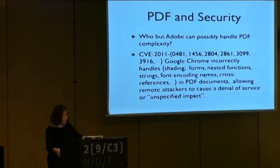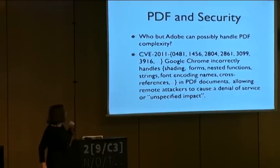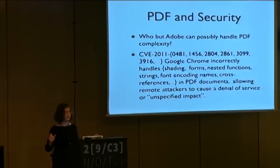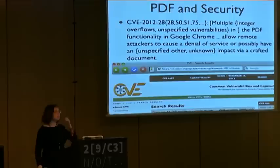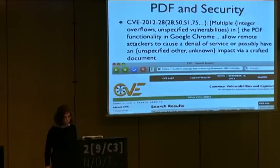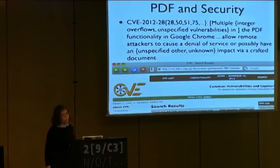Well, Adobe can kind of handle PDF. Apparently Google cannot. Just from the year 2011, there are a couple dozen CVEs in the MITRE database. They all have the same form: 'Google Chrome incorrectly handles this, this, this, and this, allowing remote attackers to cause a denial of service or unspecified impact.' In 2012 they got smarter — now they actually combine different vulnerabilities into the same bug report. Some of those CVEs have as many as 16 links to different bug reports in them. So there are 43 CVEs referring to PDF and Chrome, but in particular there are probably hundreds of actual bugs. That's the sound of Google having trouble parsing PDF.